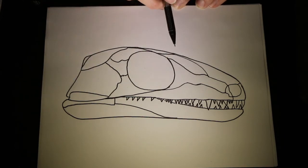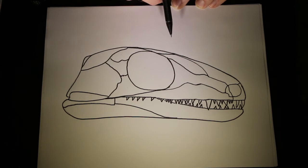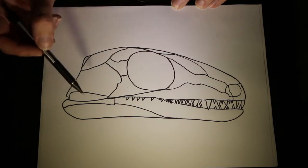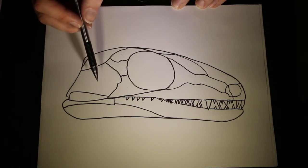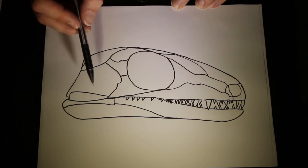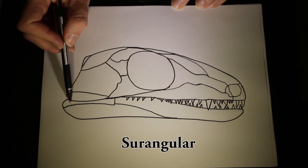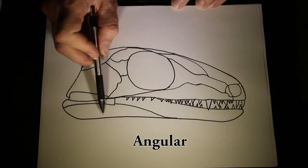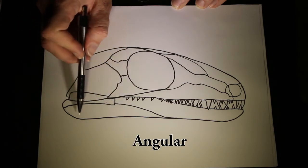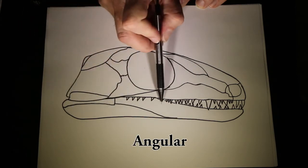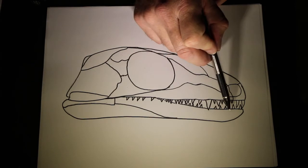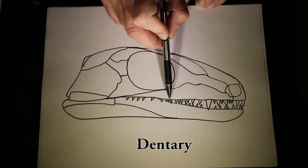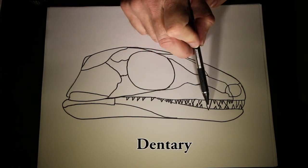The lower jaw in reptiles is composed of a number of bones. On the outside we can see the surangular bone, the angular bone, and the dentary — the dentary being the one with the teeth in the lower jaw.